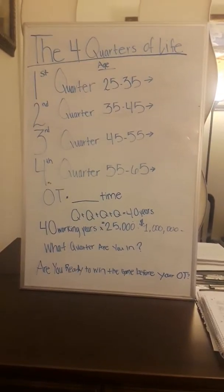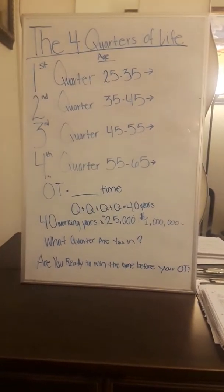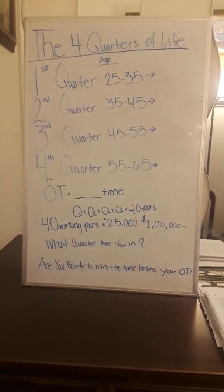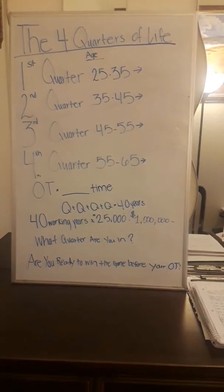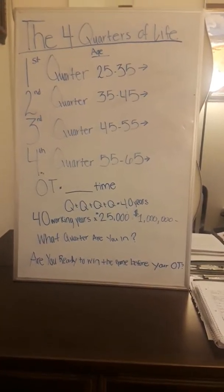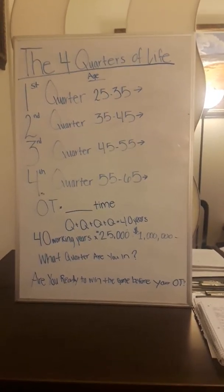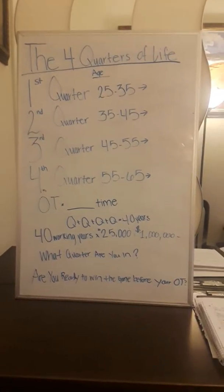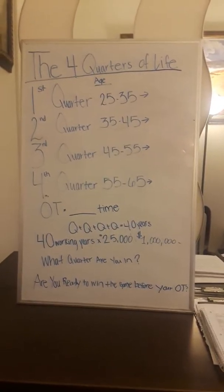If you do the math, $25,000 a year over 40 years, just the average working years, is going to equal a million dollars. So most people earn a million dollars through their working years, but how much will they have to show for it? Most people won't have much at all to show, not even 10% in most cases.